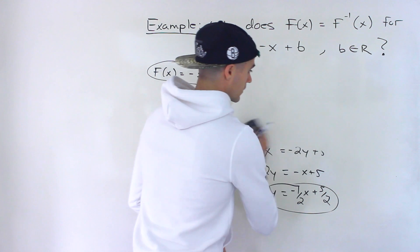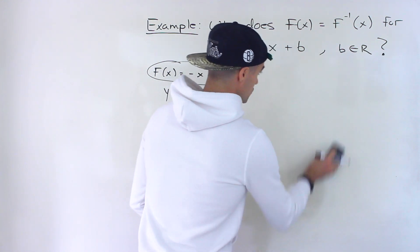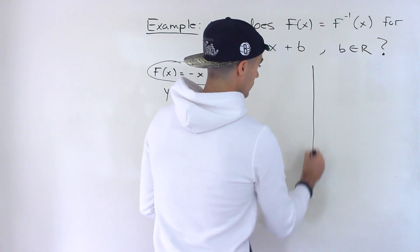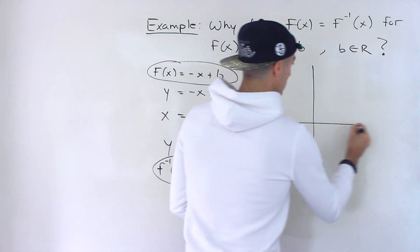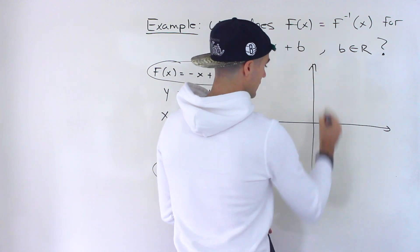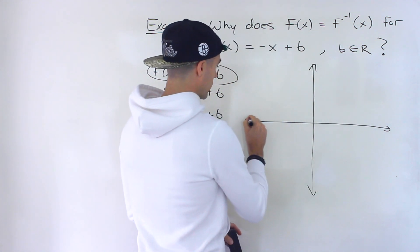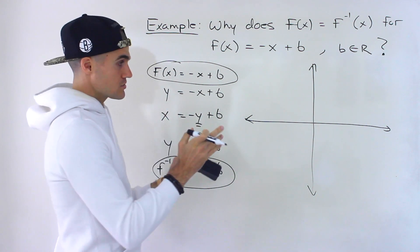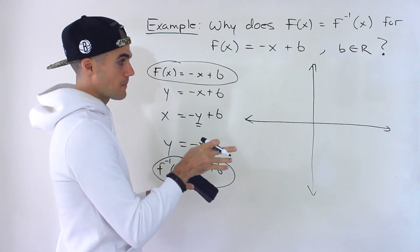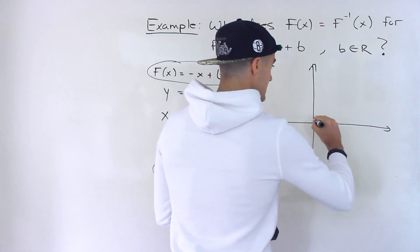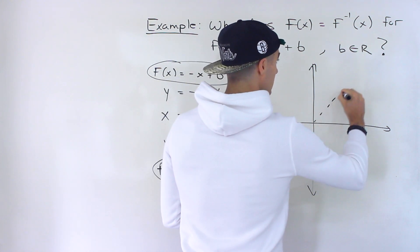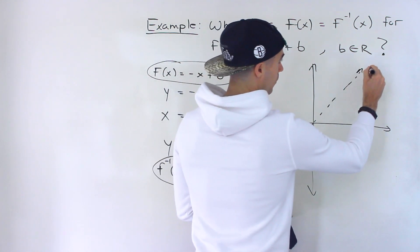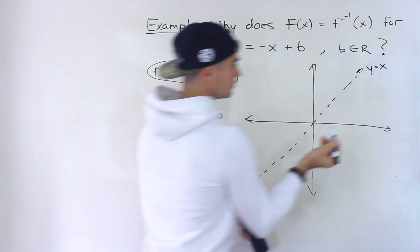That's how you show it algebraically. Why does it make sense graphically? If you remember, how do we find the inverse graphically? We interchange the x and y values — the coordinates. Another way to say it is that we reflect it over the line y is equal to x.